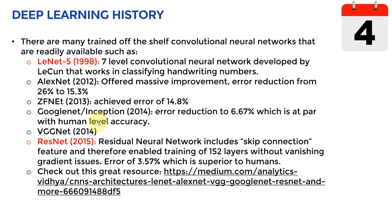A little bit about deep learning history. These different network types are off-the-shelf networks readily available today. I'll show you how to visualize two types: LeNet and ResNets, or residual neural networks. We started with LeNet in 1998 — a seven-layer convolutional neural network developed by Yann LeCun, which worked really well at classifying handwritten numbers. Then in 2012 we had AlexNet, which reduced the error from 26% down to 15.3% — a huge improvement. In 2013 ZFNet brought the error to around 14.8%.